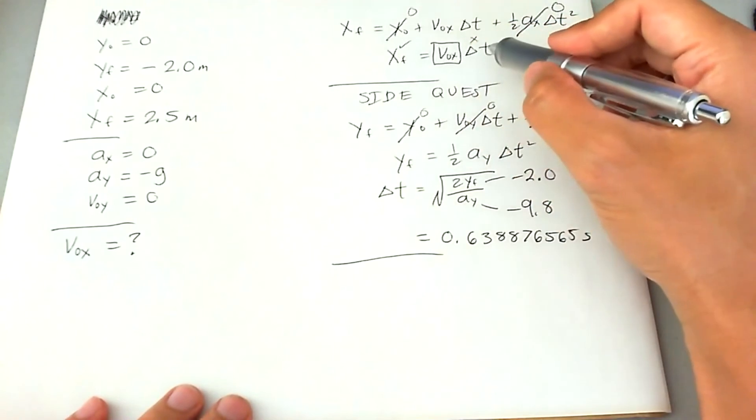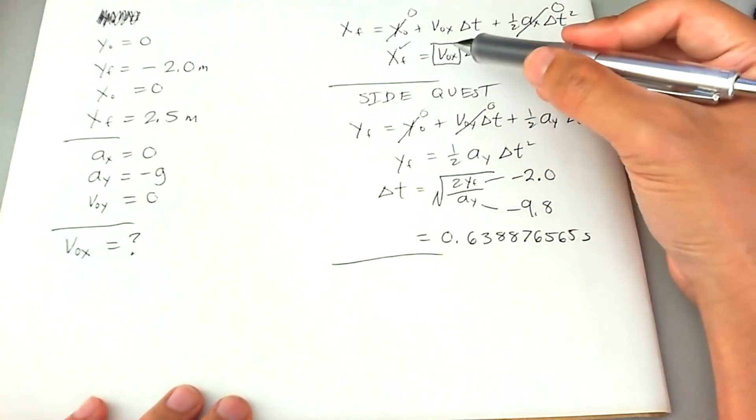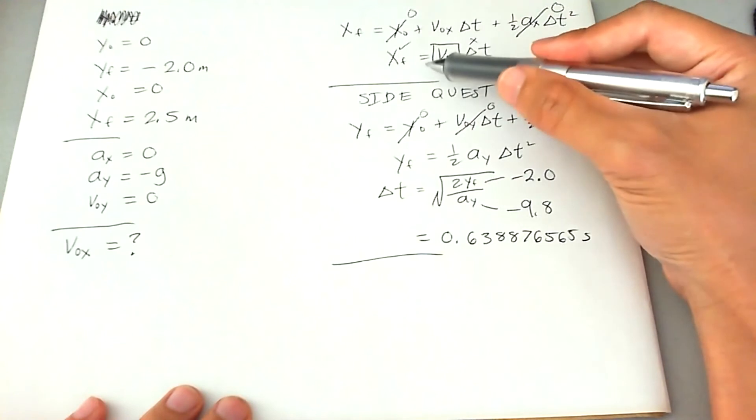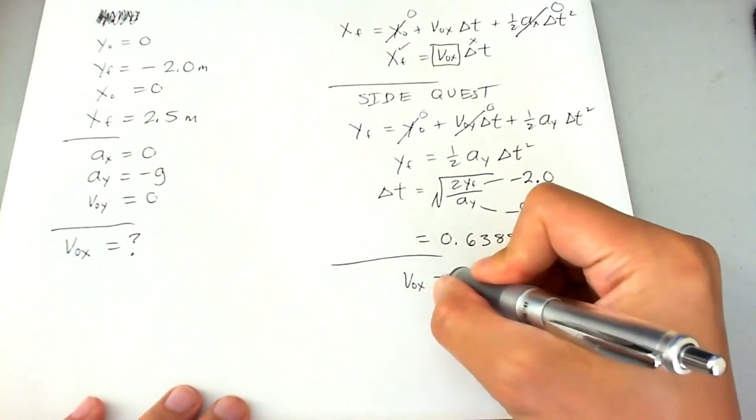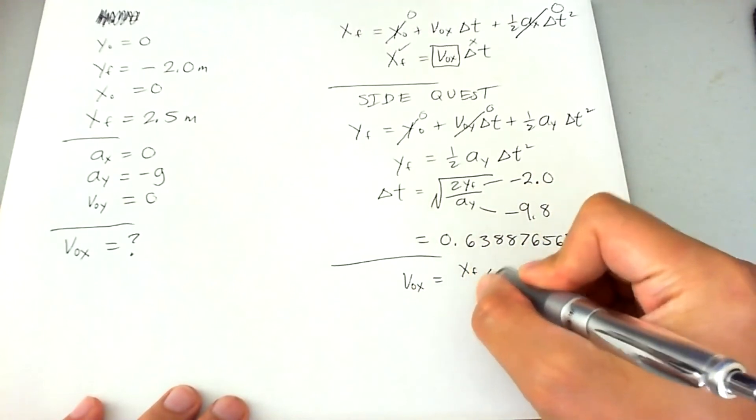We have this equation, but we're solving for V naught X. So let's isolate that by bringing T to the other side. So V naught X is equal to X final divided by delta T.